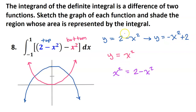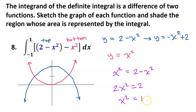If we set the two equations equal to each other, adding x squared to both sides gives 2x squared equals 2. Dividing both sides by 2, we get x squared equals 1. Taking the square root of both sides, x equals plus or minus 1. These values represent the x values of the intersection points of the two curves. That's why we are integrating from negative 1 to positive 1, and the shaded area is the area represented by this integral.